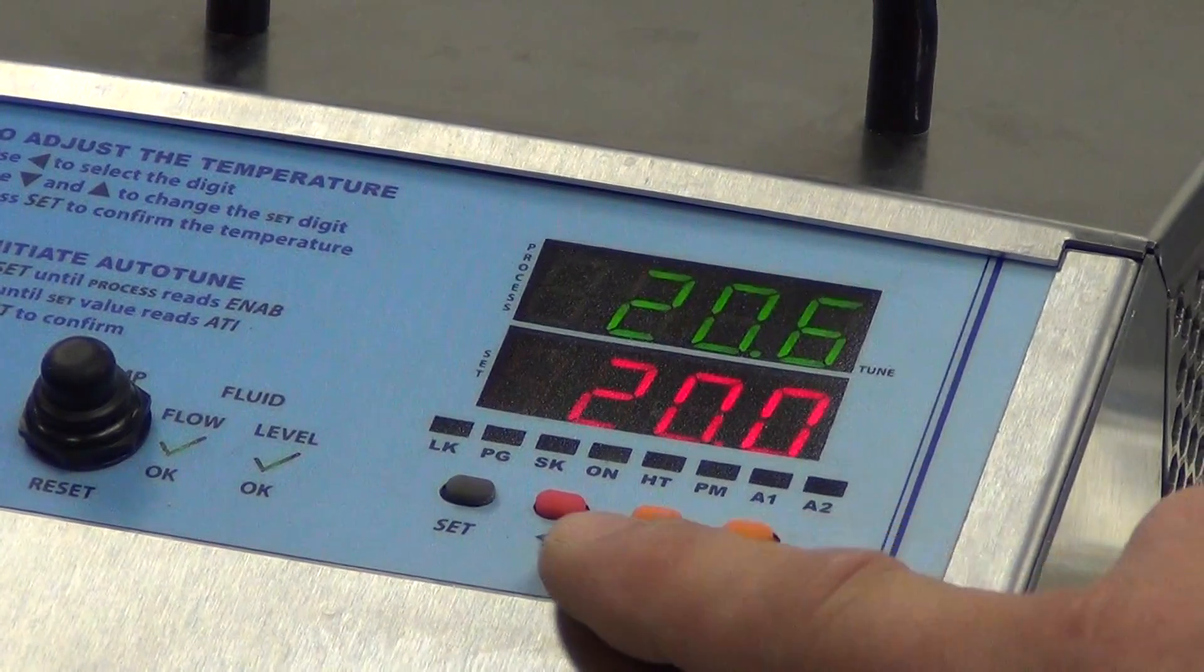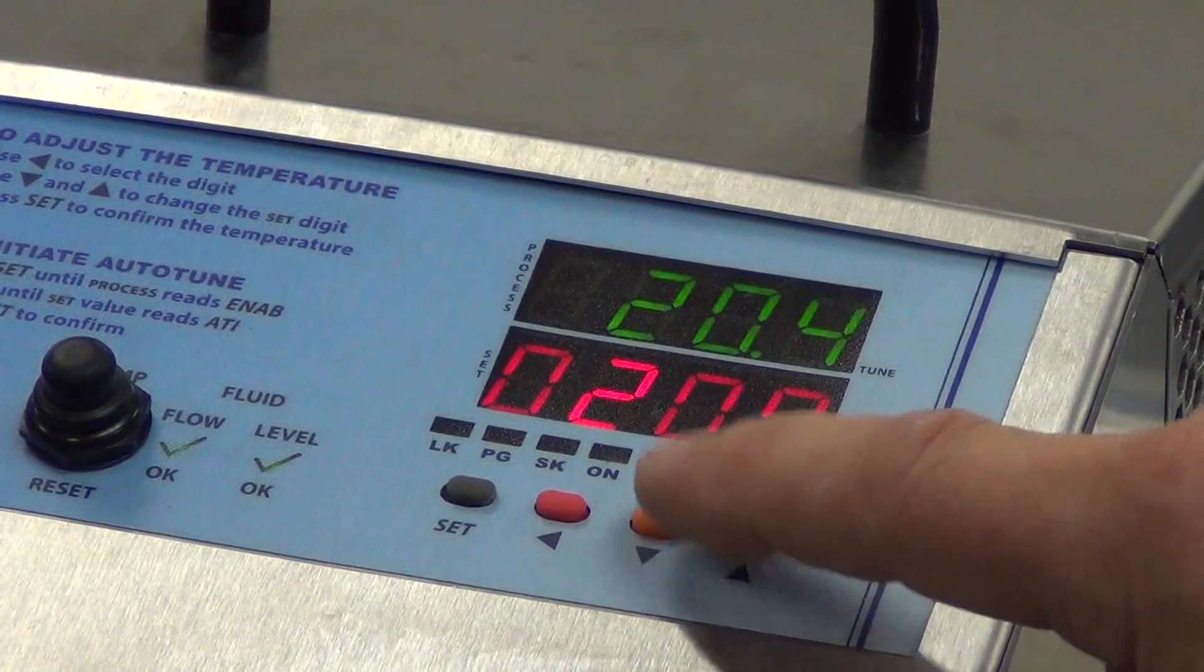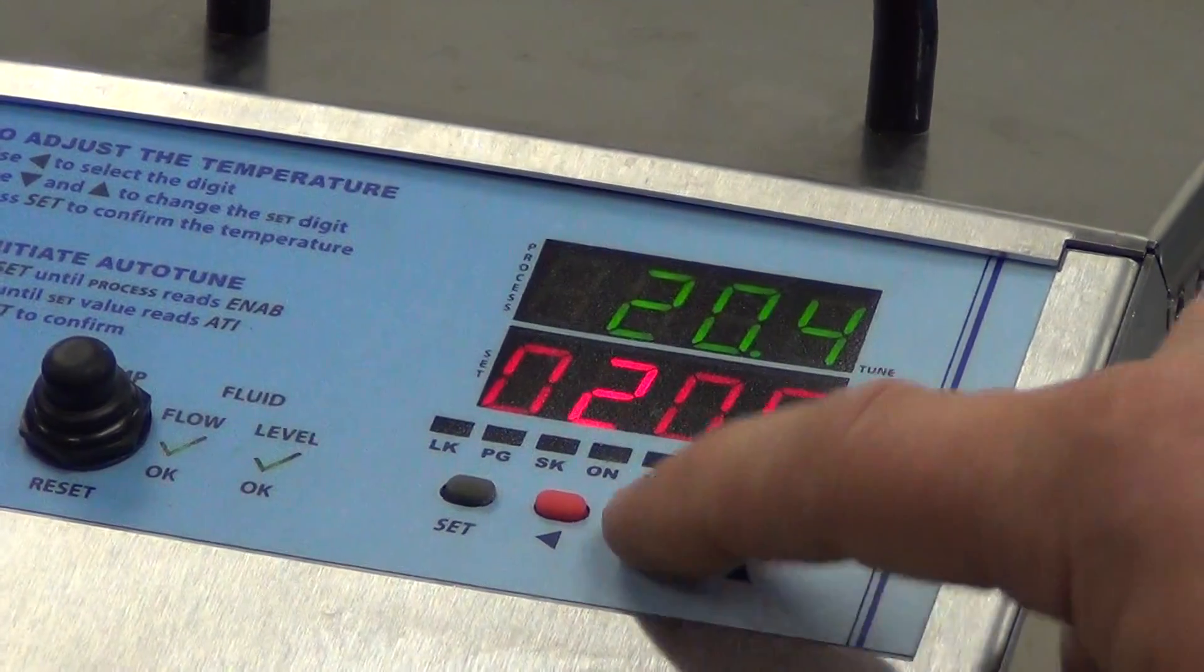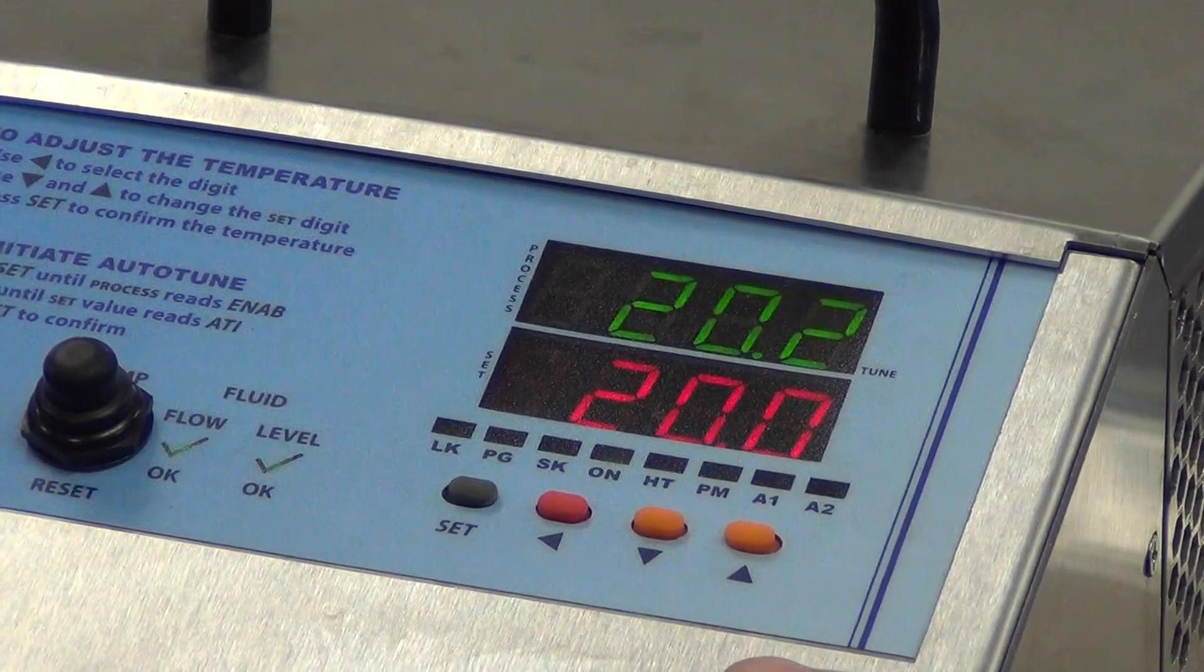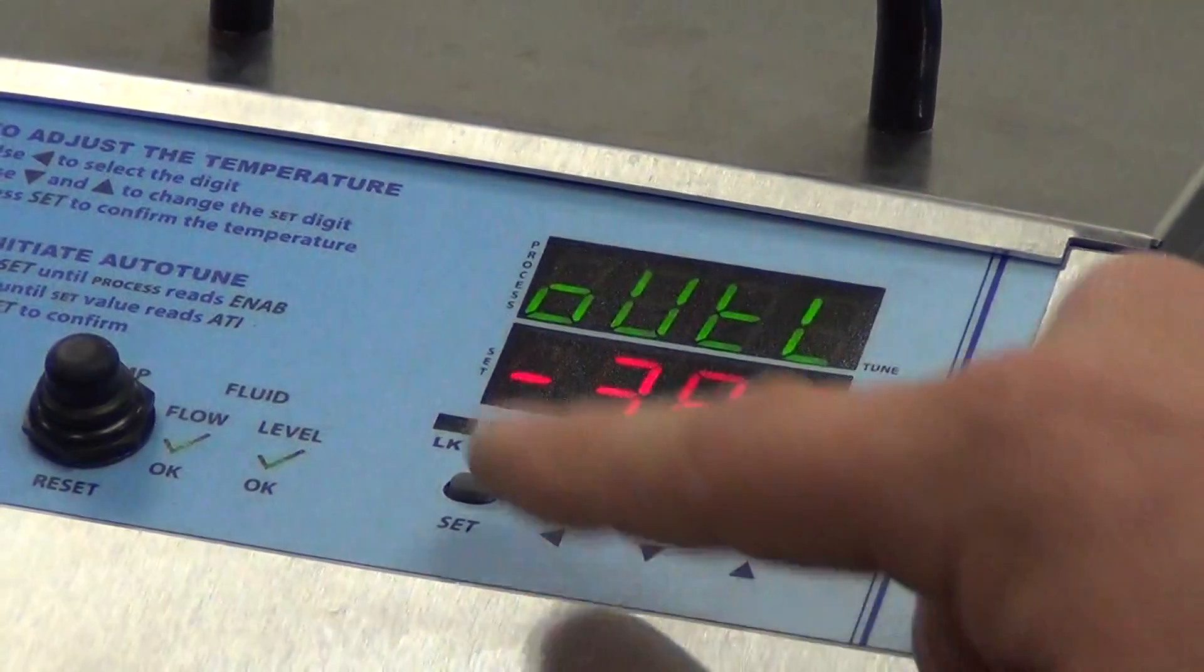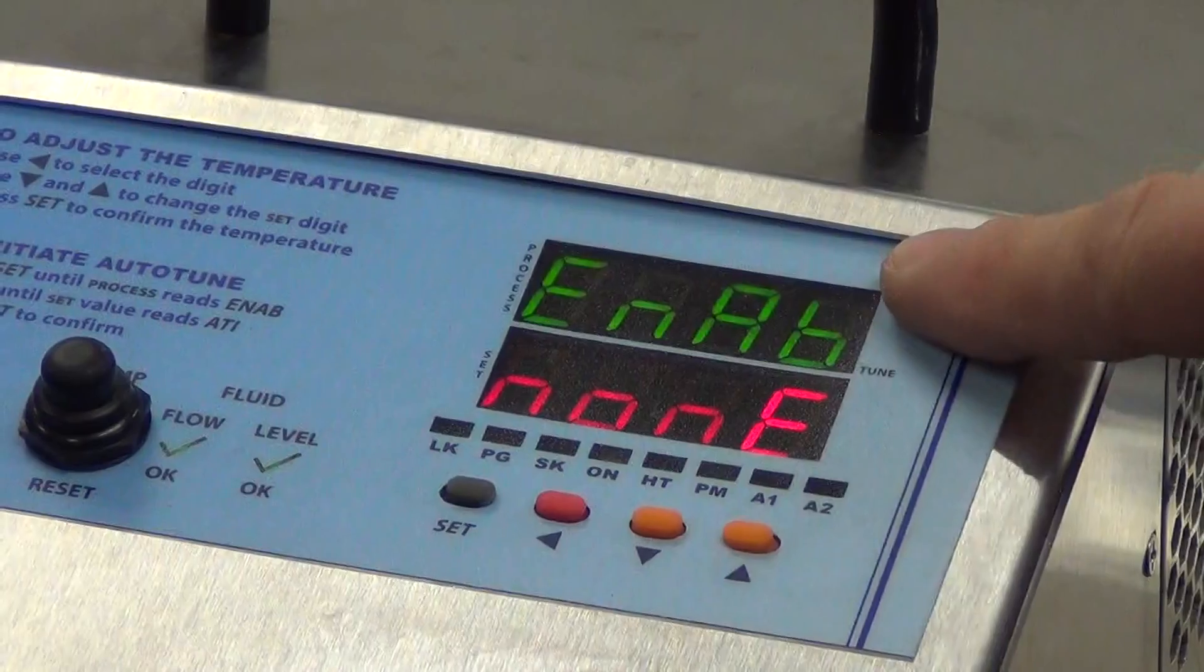If you want to adjust your temperature, go to the digit that you want to set. Use the up or down arrow to select your setting and press set. If you want to auto-tune your system, press set once, press set twice.